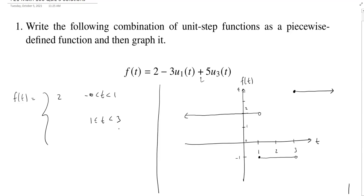Then from 1 to 3, so we're going to include 1, but not include 3, we're down here at negative 1. And then finally, when t is at least 3, and then heading off to infinity, we get a value of 4.